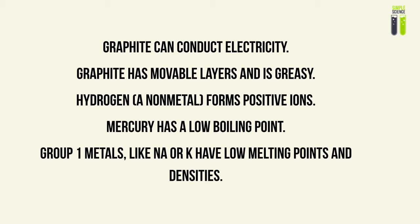Mercury, a metal which is supposed to have a high melting point, actually has a low boiling point and exists as a liquid at room temperature. And Group 1 metals like sodium and potassium have low melting points and densities, which are properties you don't normally expect from metals.